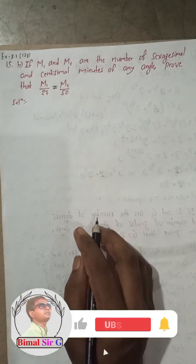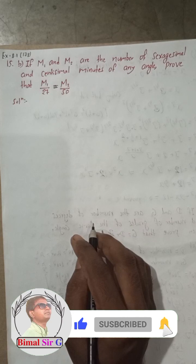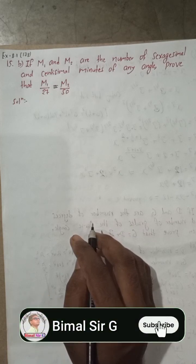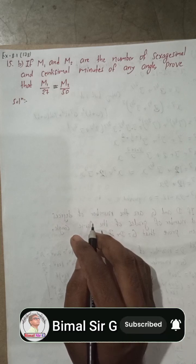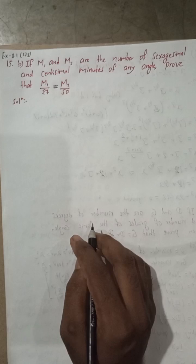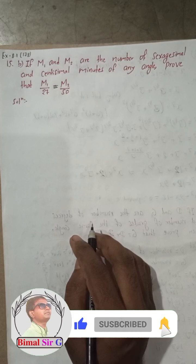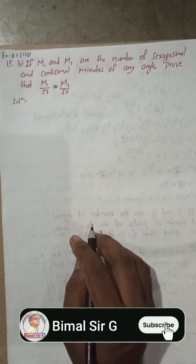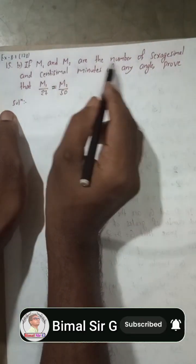Hello, welcome back to Bimal Sarji's YouTube channel. I am going to solve question number 15B, exercise 8.1, page number 178: if m1 and m2 are the number of sexagesimal and centesimal minutes of any angle, prove that m1/27 is equal to m2/50. Now, solution.